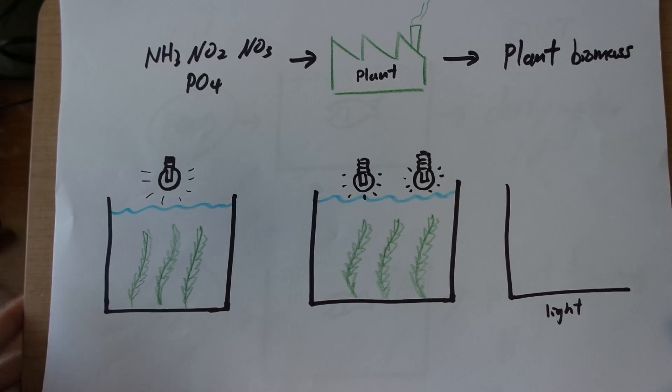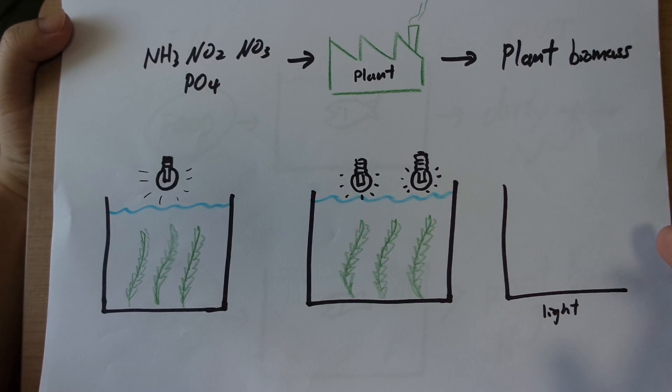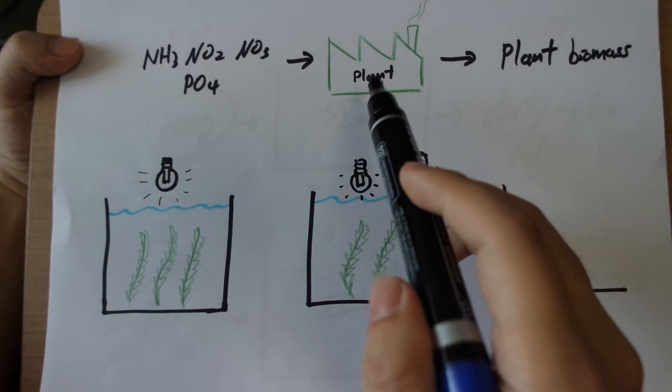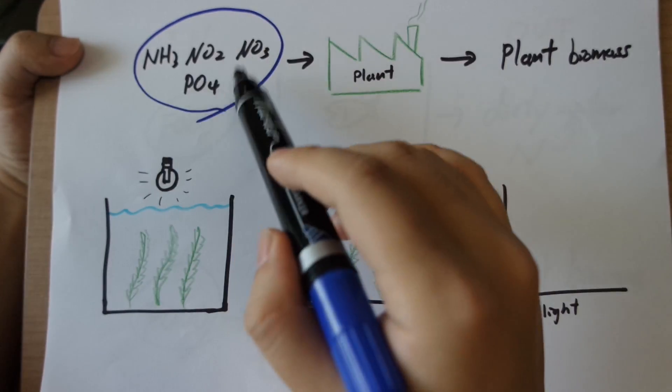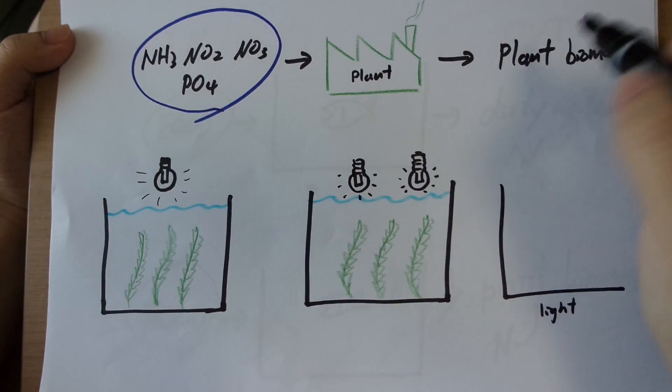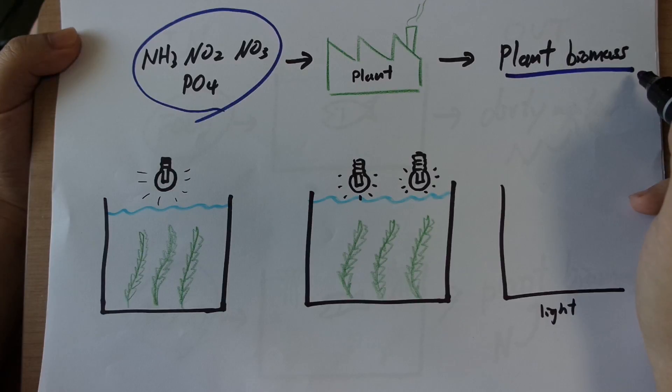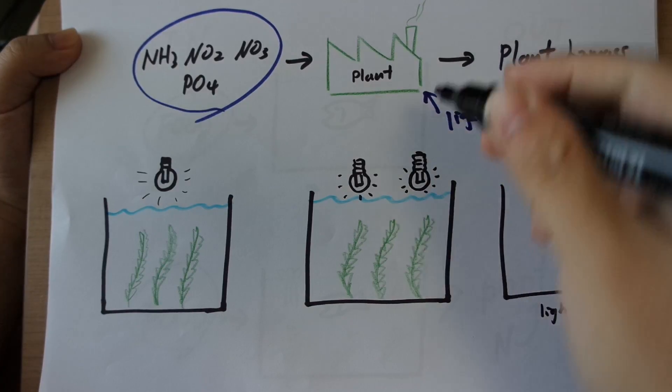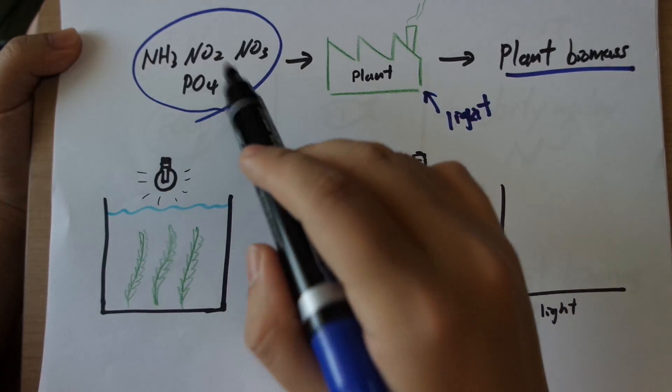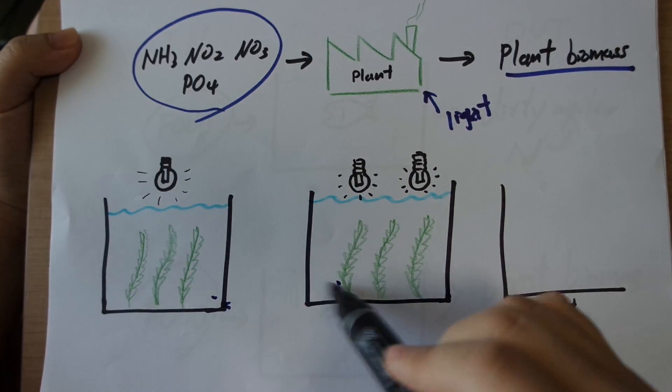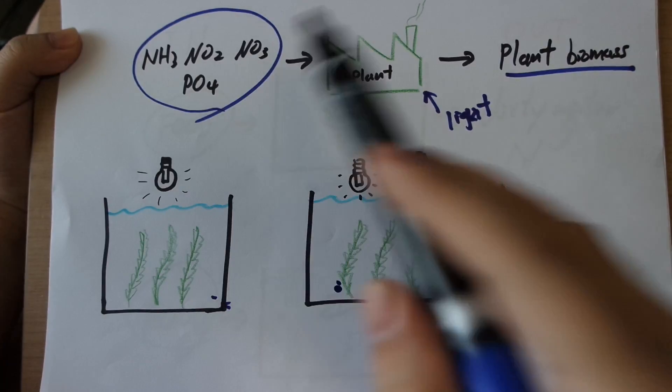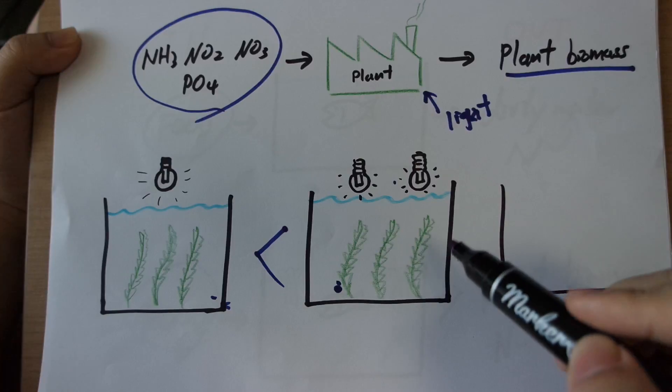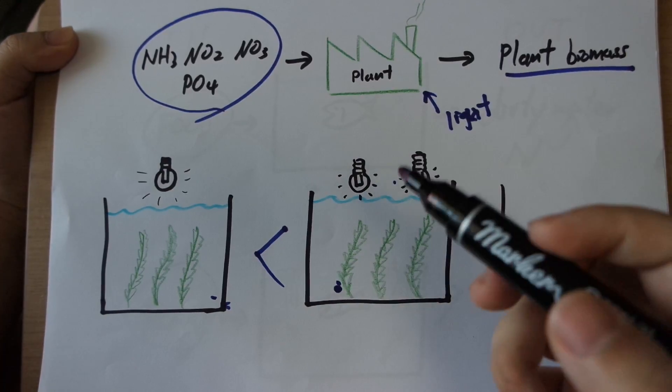And here is another thing that you need to understand about how plants filter. That is, the light is very important. Because the way plants filter water is you can think of them as factories that remove all of these nasties, nitrogen and phosphate, from the water and turn it into plant biomass. And what powers this factory? Of course, it is light. So if you can't power this factory, this factory is not going to remove this stuff from the water. So let's say we have these two tanks that are exactly the same. This has a small amount of light and this has a lot of light. Obviously, this is going to have more filtration because the plants have more light to use. They have more power to use to remove all those nasties from the water.